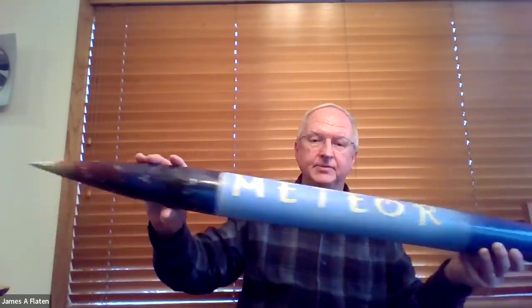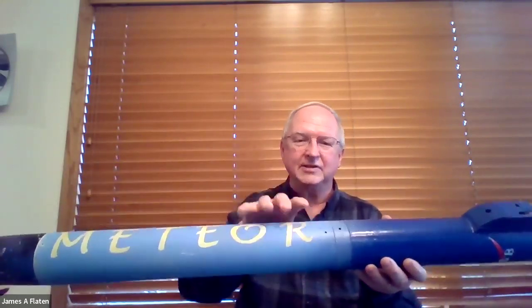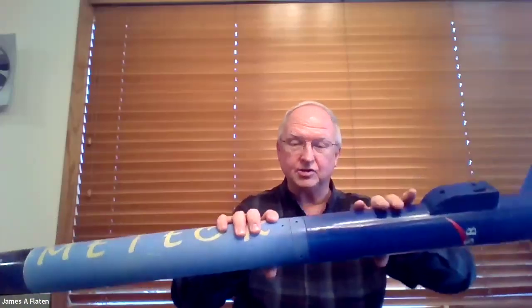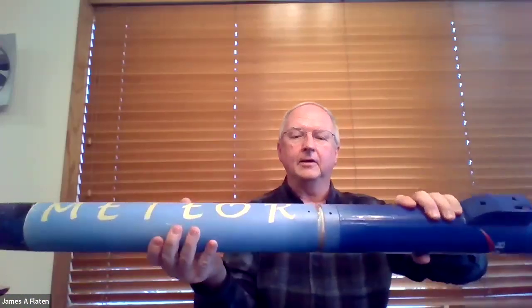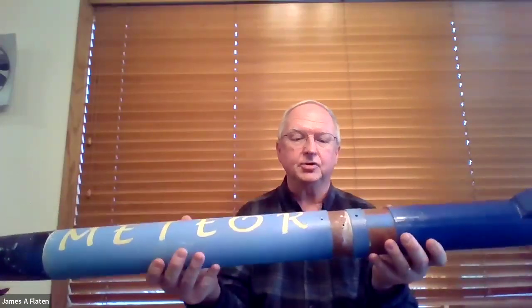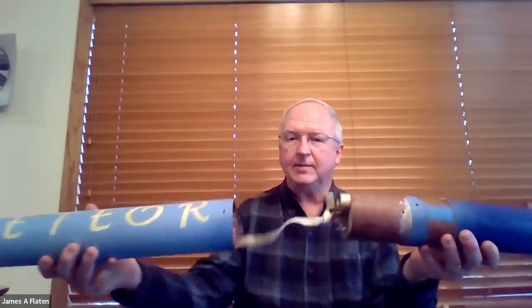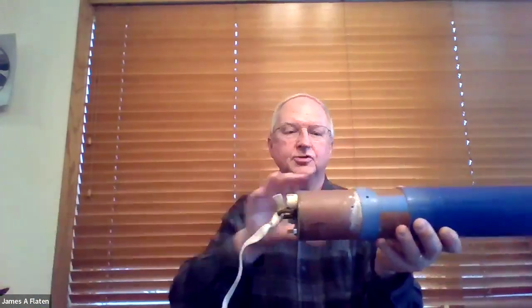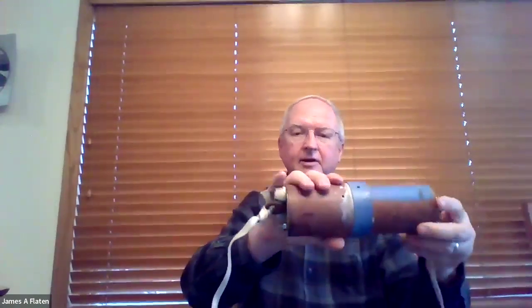So again, remember this is the upper section, so just memorize because you won't be able to see it all in the video. Upper section is lighter color, lower section is darker color on this particular rocket, and then here's the avionics bay. So the avionics bay again is a coupler tube. I'm going to actually separate the rocket, so I took off the upper section, I took off the lower section, and then here I can see the avionics bay.